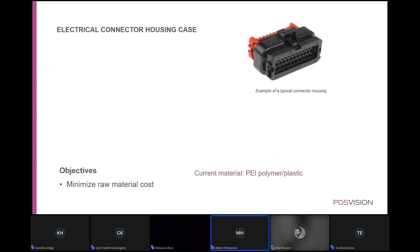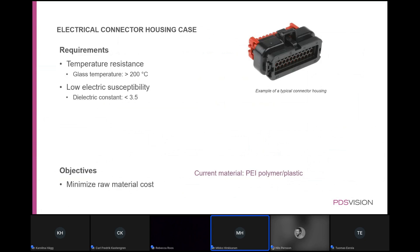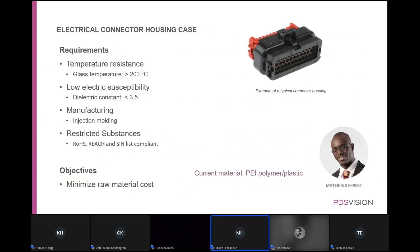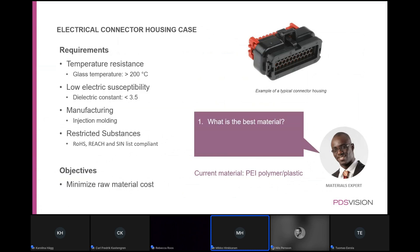As a use case, consider an electrical connector with requirements: temperature resistance so it doesn't melt, a low dielectric constant so it doesn't alter electric signals too much, injection molding capability for manufacturing at scale, and RoHS and REACH compliance. The objective is to minimize raw material cost. If you currently know it's polyamide as a plastic, the question is: what is the best possible material for this use case, what performance can you get, and can you get any cost benefits?